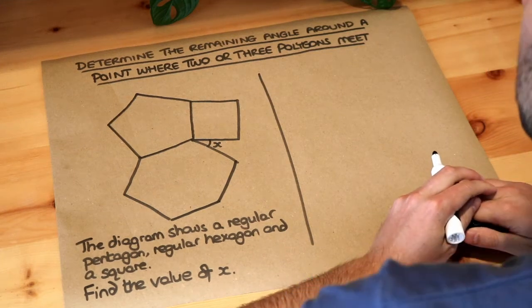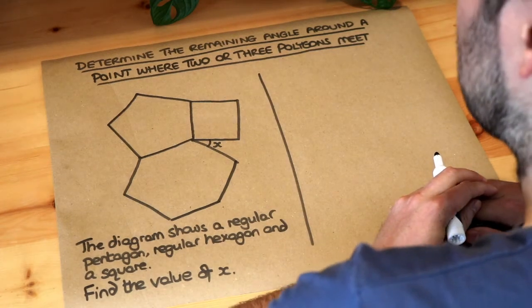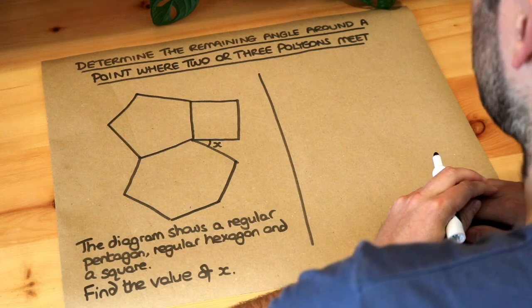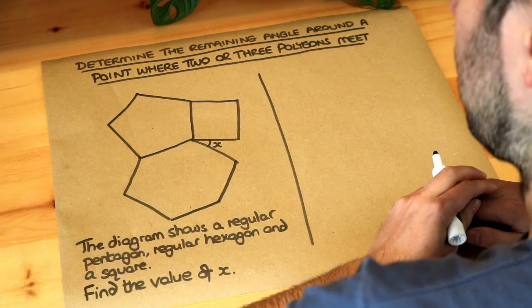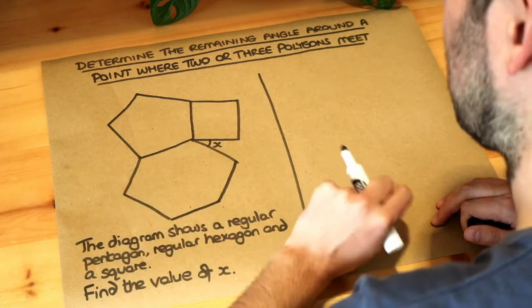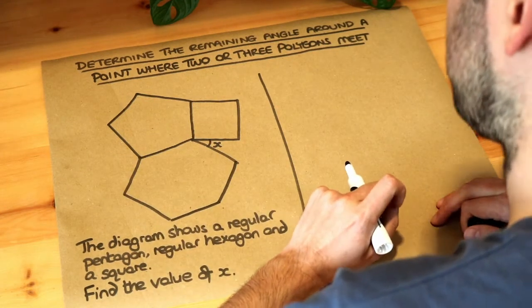Hello and welcome to this Dr Frost video on determining the remaining angle around a point where two or three polygons meet. In a previous video we saw how to find the interior angle, the inside angle of any regular polygon.